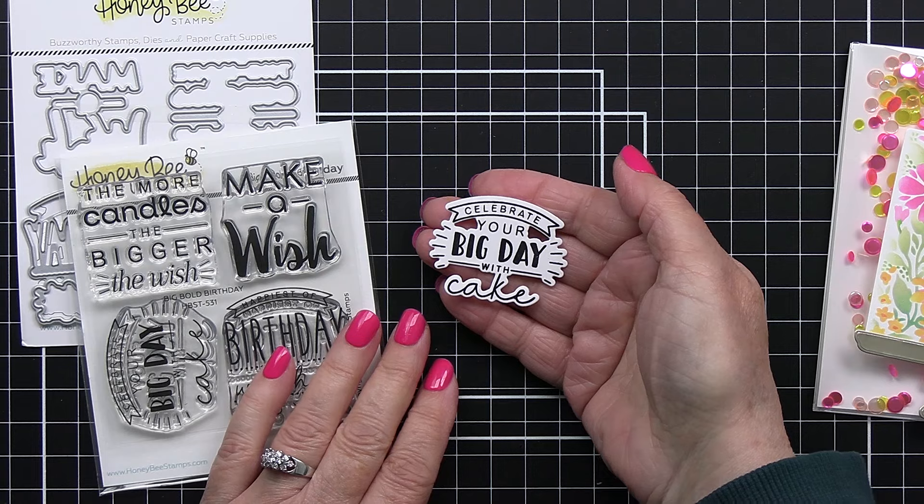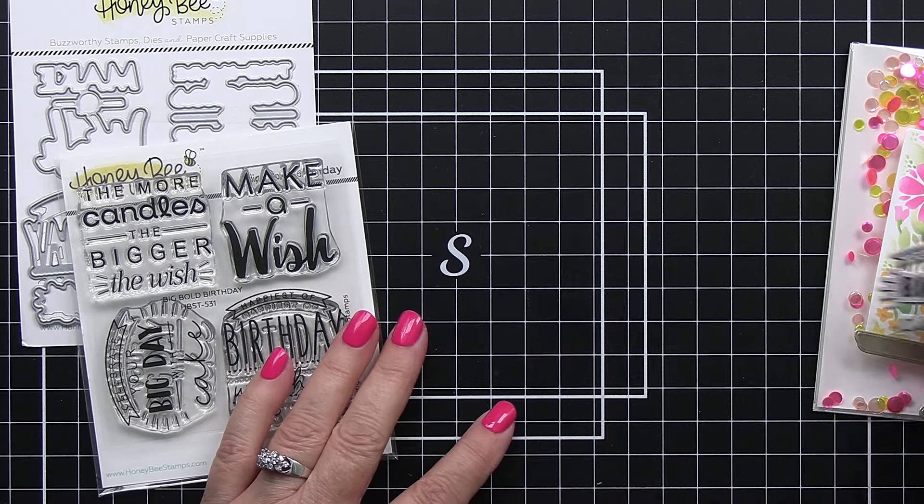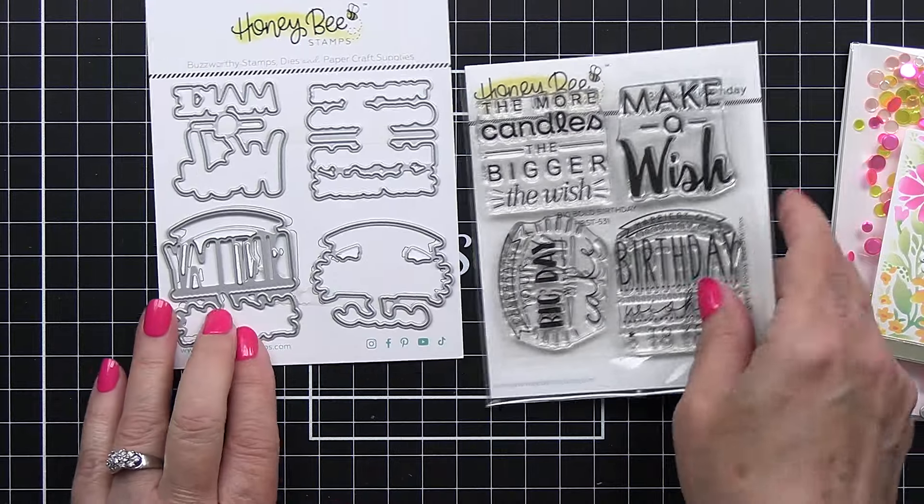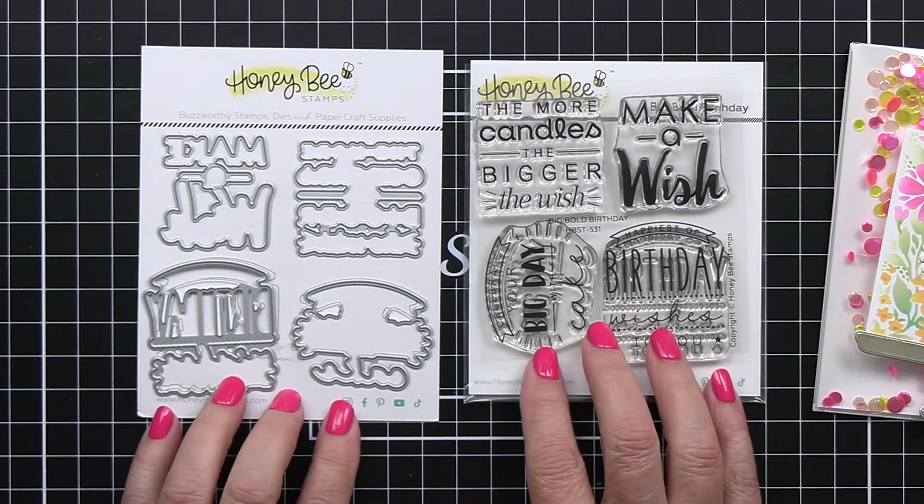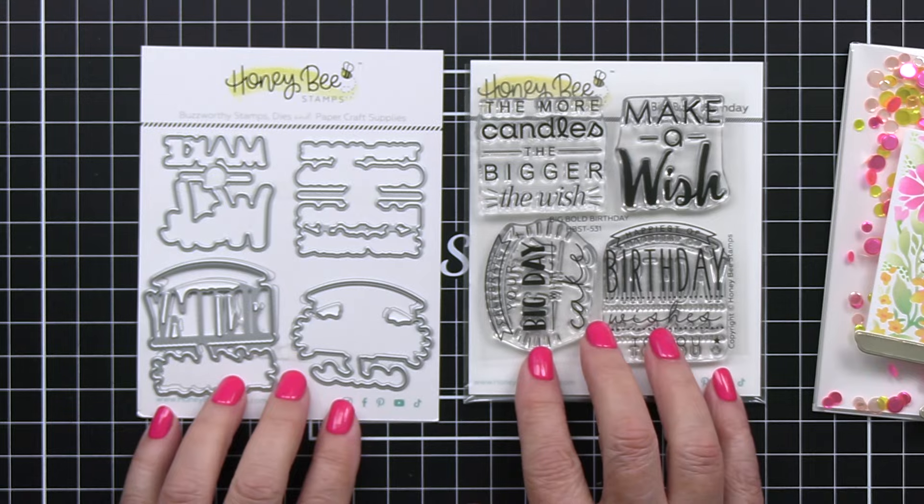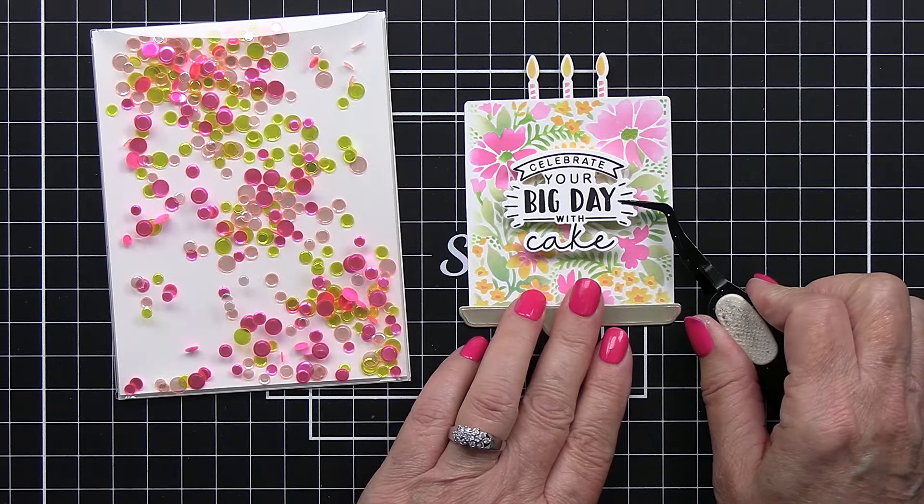I am using the Big Bold Birthday stamp and coordinating die set. I love this Big Bold Birthday set. It is so good and of course there's a coordinating die and it just die cuts out these really cool sentiments for your project.